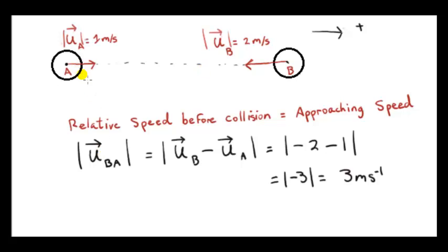What I want to do here is compare the approaching speed of the two spheres to the receding speed of the two spheres after they have collided. To get the approaching speed, we get the relative speed of one sphere with respect to the other sphere before the collision. It doesn't actually matter which sphere we choose. I have chosen the speed of B relative to A, so we imagine a coordinate system fixed to sphere A and see what sphere B's speed looks like from the point of view of A. That's a measure of how quickly the gap between the spheres decreases — the rate at which the distance decreases. It should be clear that's just the sum of the speeds: 2 and 1 is 3.